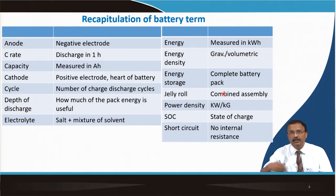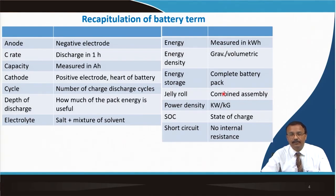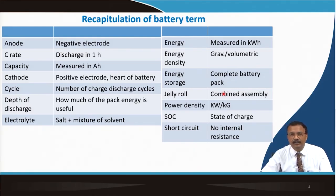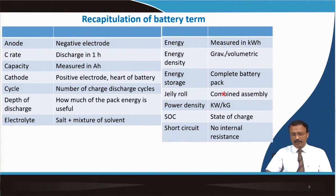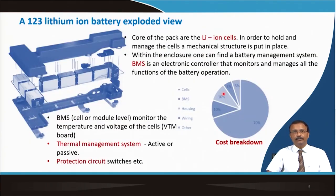State of charge is an important battery characteristic, as is state of discharge. Short circuit of the battery is also very important — basically if there is no resistance due to lithium dendrite formation or other issues, we call it a short-circuited battery.